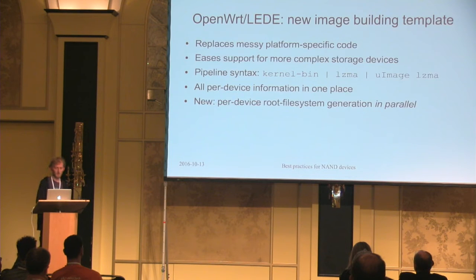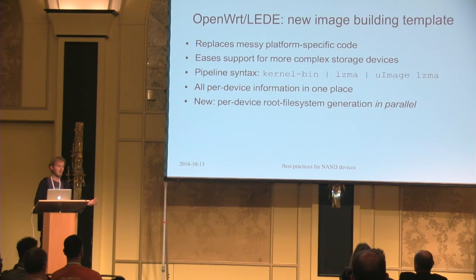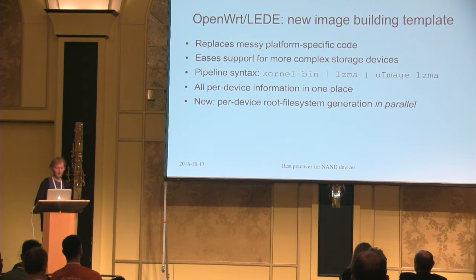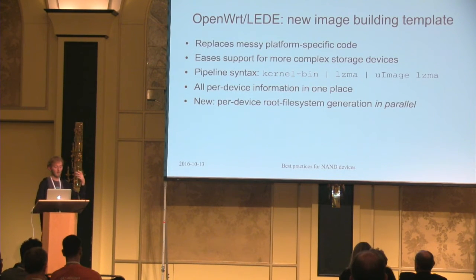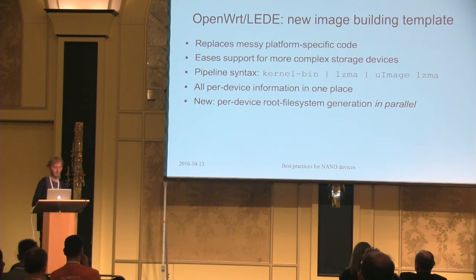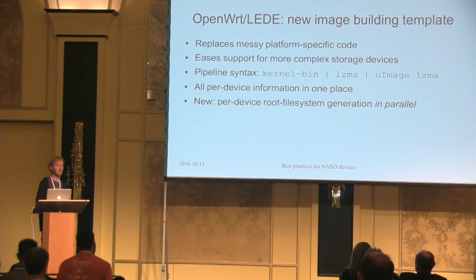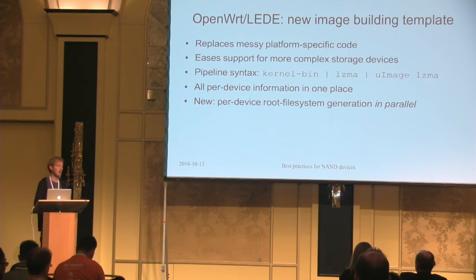The advantage of the new image-building template is also that you have all device-specific information in a single location. Previously we had profiles, the image makefile, and a lot of userspace probing translating one name into another. Now the name you see in make menuconfig is the same as the device tree source filename and the image filename — all in a single place. Also, per-device root file system generation is now possible and even done in parallel during the build, which is great for release builds where each device image comes with packages selected for that specific device.